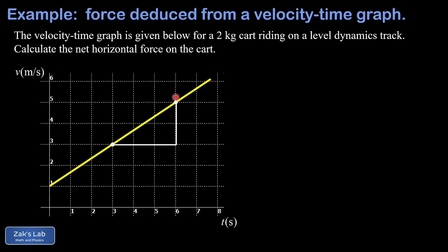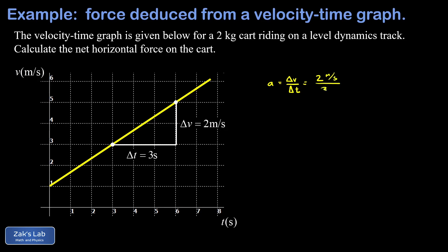Then it speeds up to five meters per second at t equals six seconds. We want to compute the change in velocity and the change in time between these two points. Our change in velocity is two meters per second, while our change in time is three seconds. This means our acceleration — given by delta v over delta t — is two meters per second divided by three seconds, or two-thirds meters per second squared.